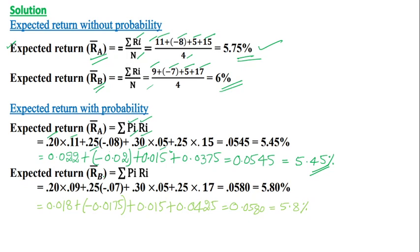R̄B with probability — the formula is Σ Pi × Ri. Taking all B probabilities and returns: 0.20 × 0.09 + 0.25 × (−0.07) + 0.30 × 0.05 + 0.25 × 0.17. That equals 0.0580. Converting to percentage by multiplying by 100, we get 5.80%. So the expected return for Stock B with probability is 5.8%.